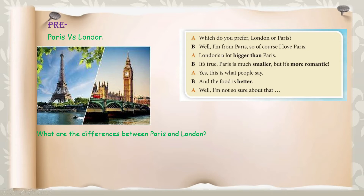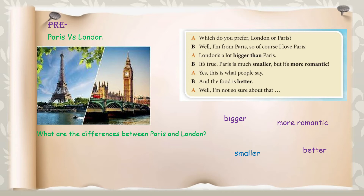From this conversation, we can identify comparative words. We see 'bigger than' — London is bigger than Paris. Next, 'Paris is much smaller' — the word 'smaller'. Then 'it's more romantic' — the phrase 'more romantic'. And the food comparison uses 'better'. So all these words — bigger, more romantic, smaller, and better — are used to compare the two cities.